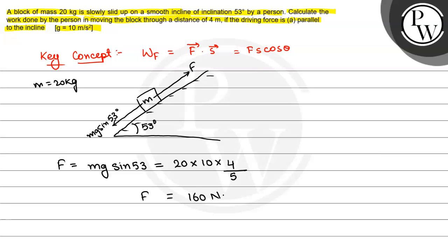Slowly slid up means that acceleration is 0. So F must be equal to mg sin 53. Now we have displacement given that is 4 meter. And also it's said that driving force is parallel to the incline, so theta is equal to 0 degree.